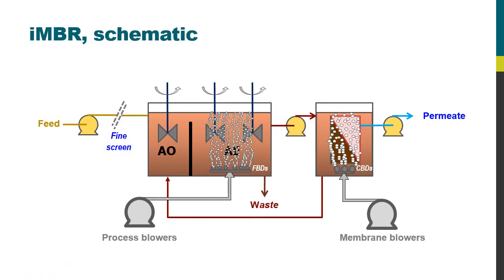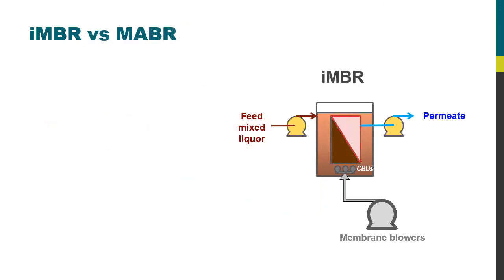I've already described the workings of an immersed membrane bioreactor in a previous video. For this current video, I just want to focus on the membrane tank. Here we have the membrane tank — it is fed with mixed liquor from the process tank. The membrane is also scoured by coarse bubble diffusers, which produce large bubbles of air.